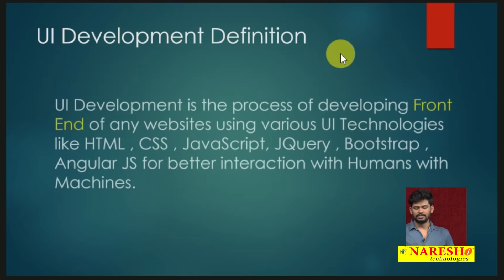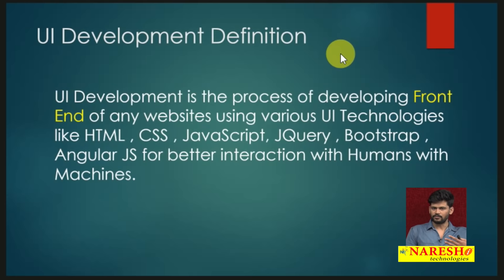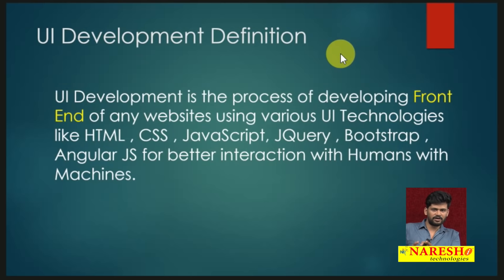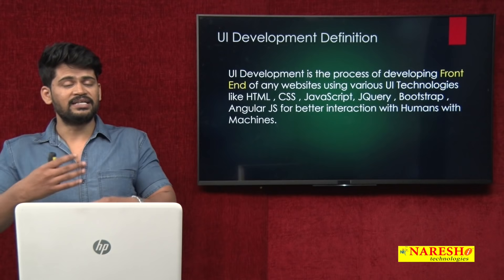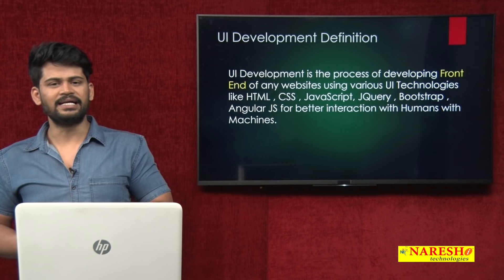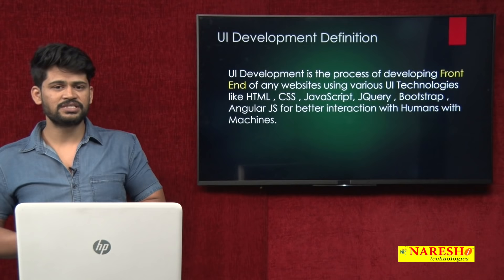There is a definition for UI development. Why has the UI concept come? One human wants to interact with a machine — you have to build that, you have to develop the front end of that. UI development is a process of developing the front end of any application by using various technologies for better interaction between a human and a machine. UI development contains various technologies; by using those, you build one web front end of any application that a person can interact with.